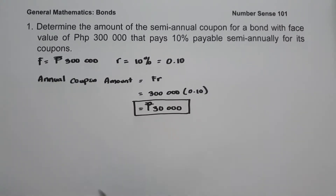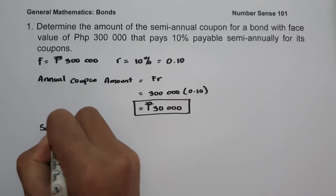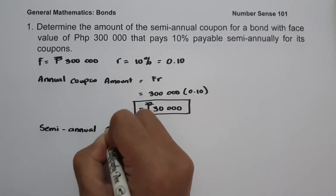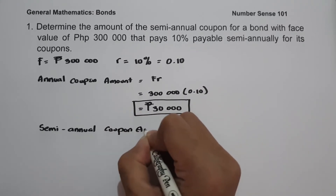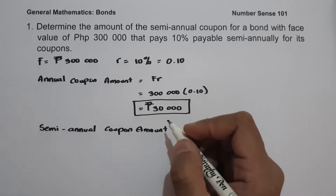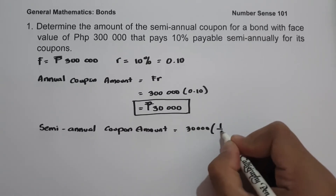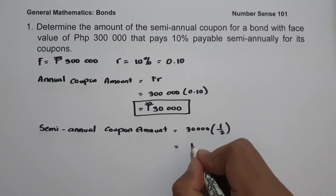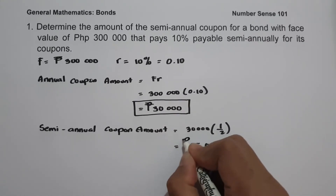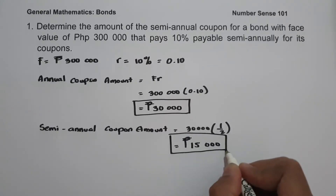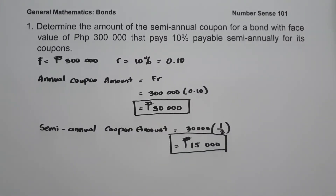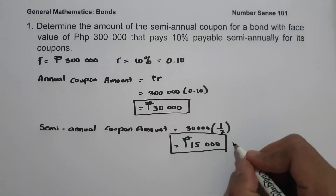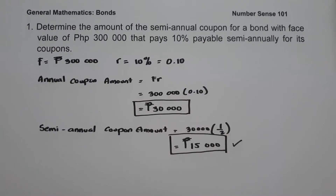To find the semi-annual coupon amount, we multiply the annual coupon amount of 30,000 by one-half, because payments are semi-annual. So 30,000 times one-half equals 15,000 pesos. Therefore, the semi-annual coupon amount is 15,000 pesos. Always remember: the coupon rate is used only for computing the coupon amount and is usually paid semi-annually. It is not the rate at which money grows.